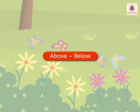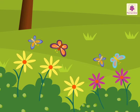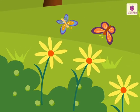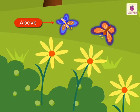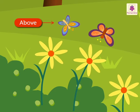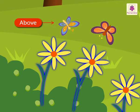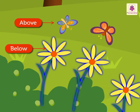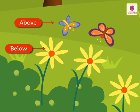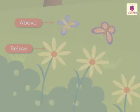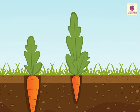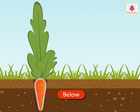Above, below. Look, the colourful butterflies are above the beautiful flowers. And the flowers are below the butterflies. Hey, can you see these carrots? They grow below the ground.